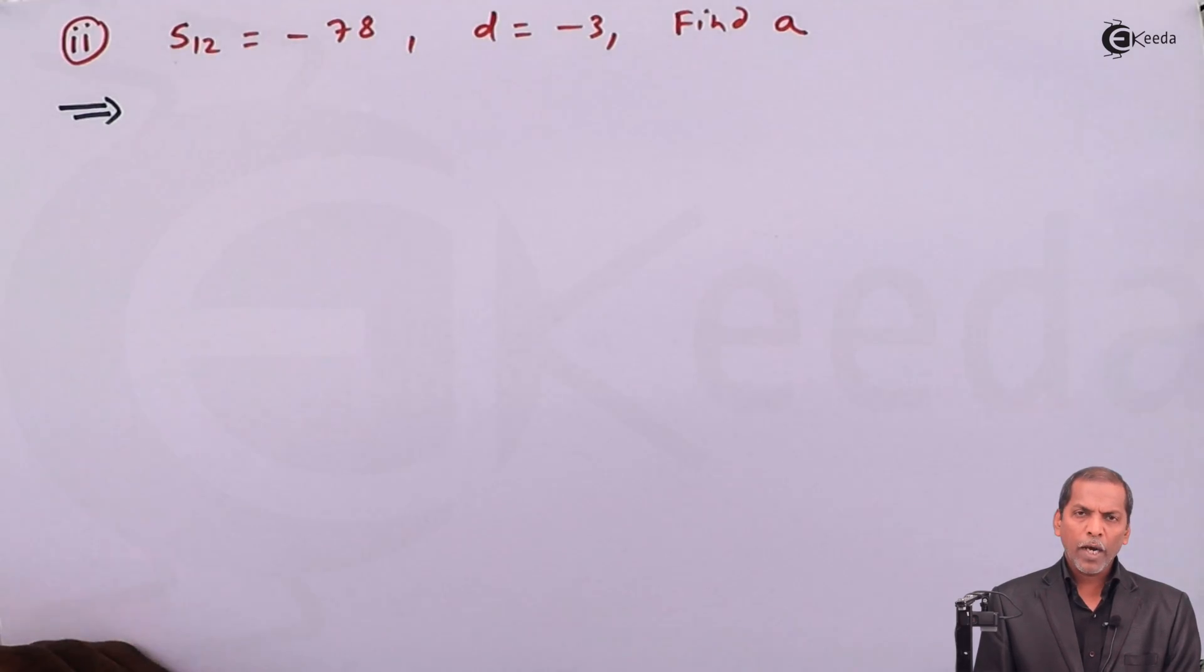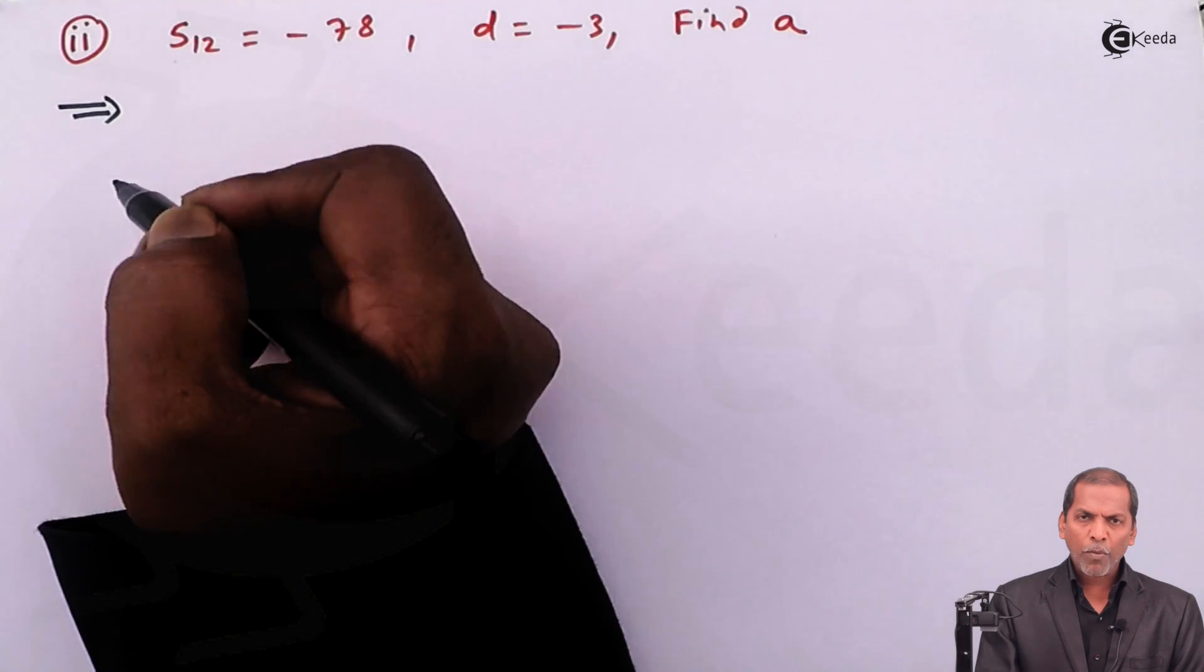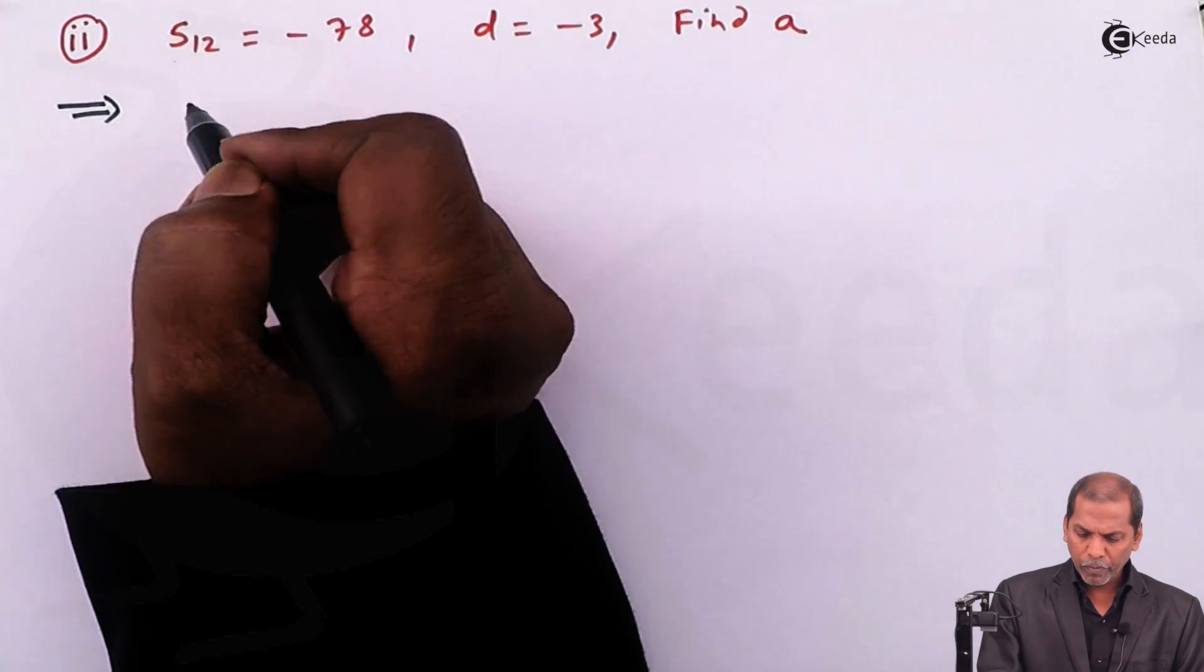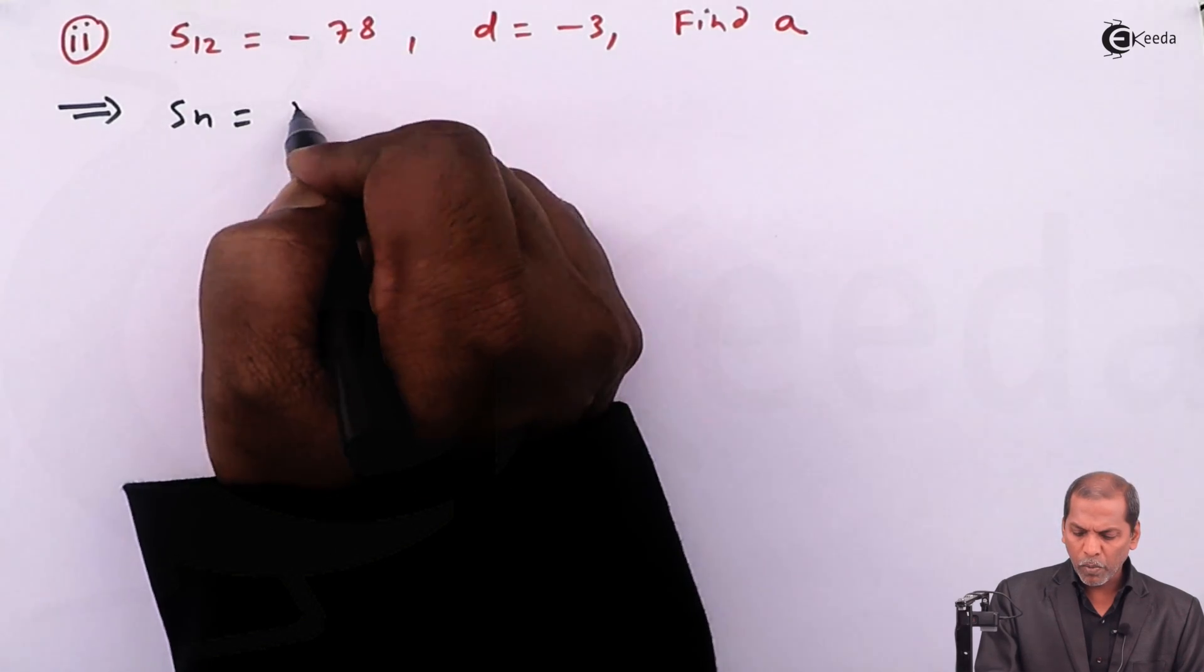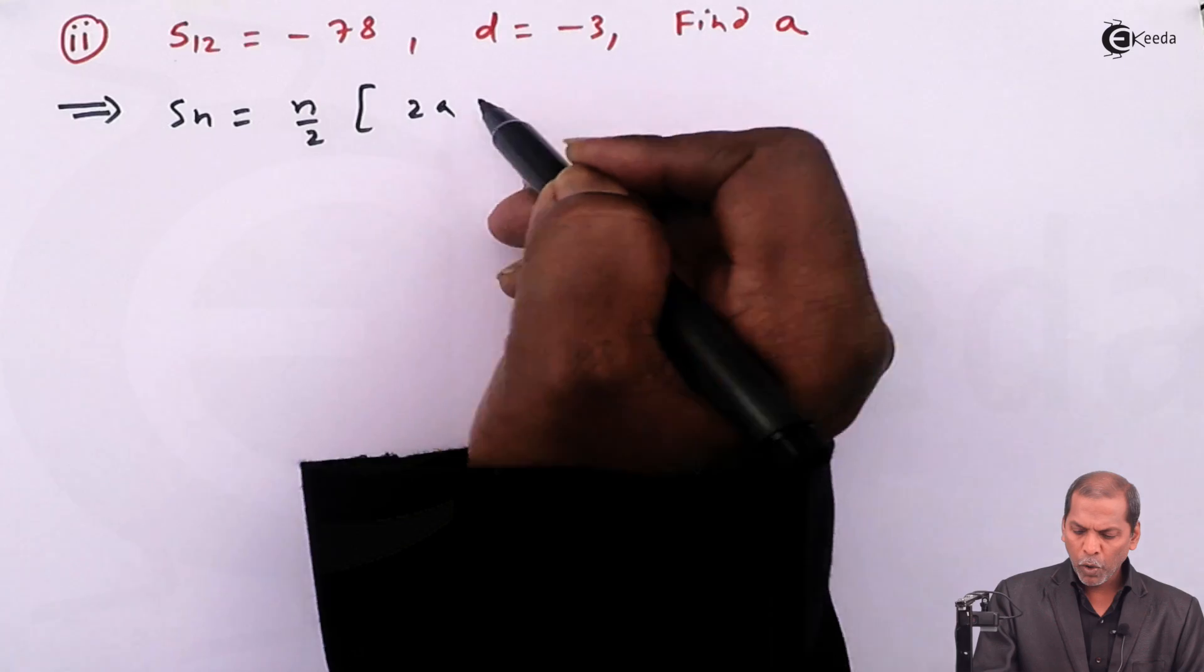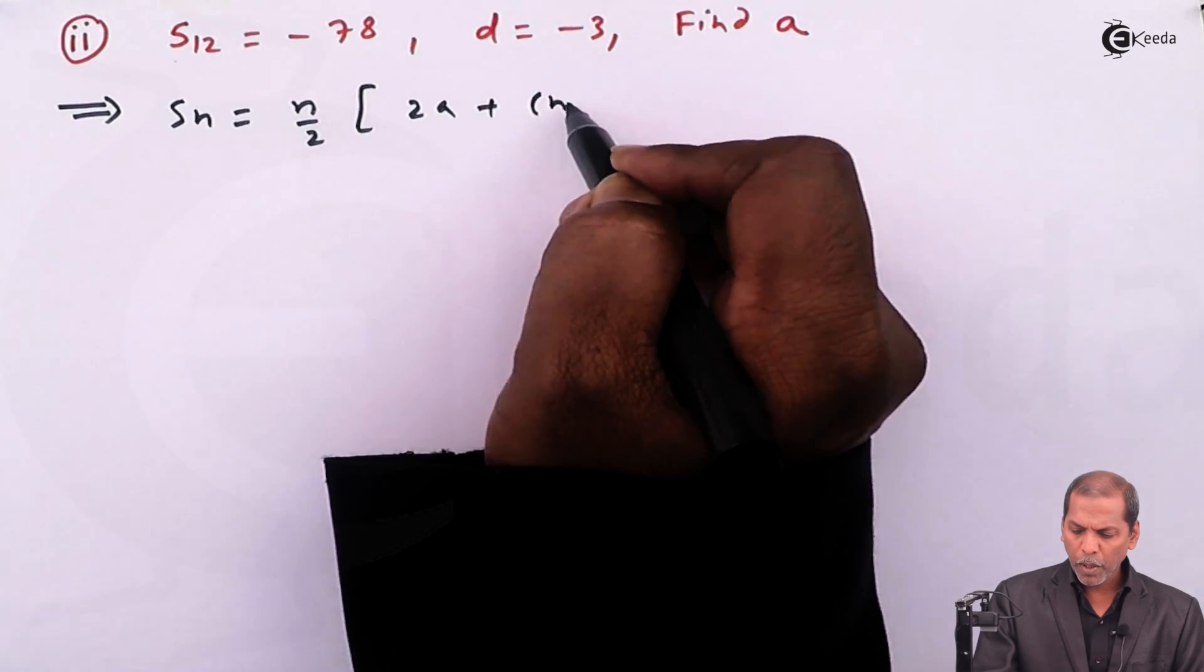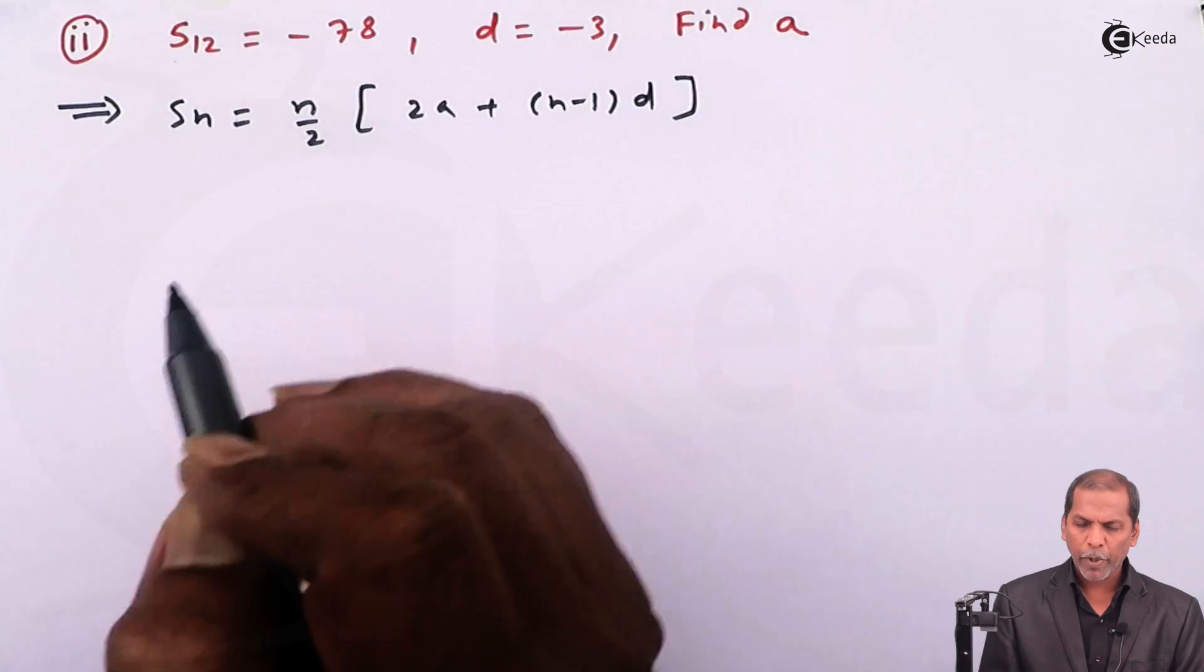Now let's see the solution. Since the sum of first 12 terms is given, so first we write formula for Sn. Sn equals n upon 2 in bracket 2a plus (n minus 1) into d bracket complete.